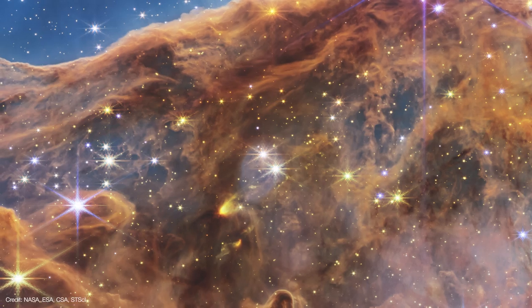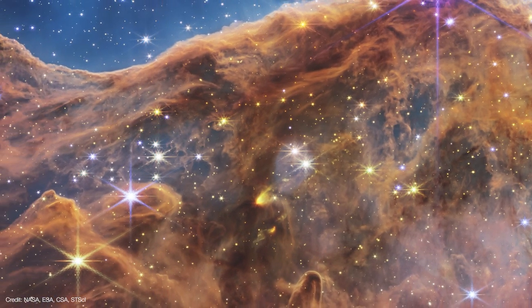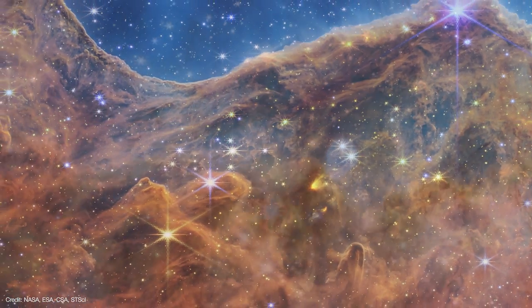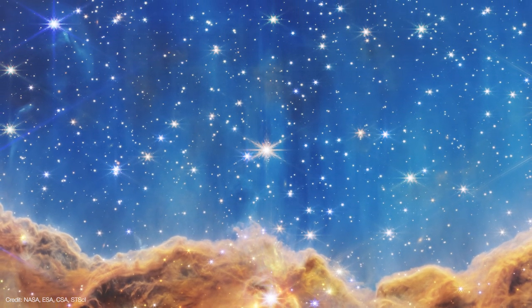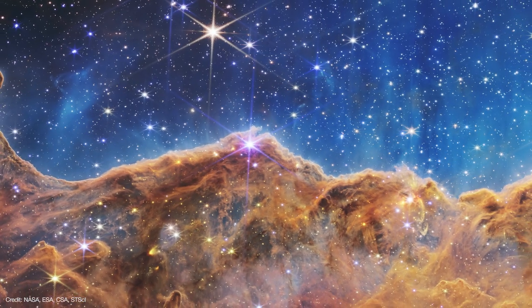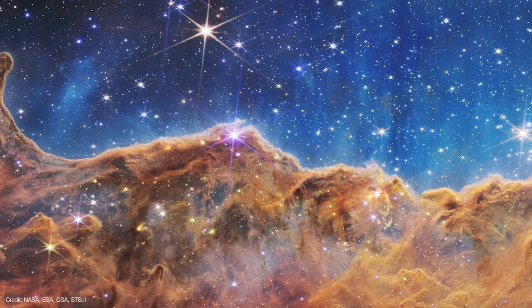Now figuring that out is going to require some study. And Webb lets us see the process of star formation in such incredible detail now. We could see wind outflows from the protostars that are blowing bubbles into the walls of the surrounding clouds. We can also see what looks like faint steam rising from the ridge. This is actually ionized gas and hot dust streaming away from the nebula due to intense ultraviolet radiation.